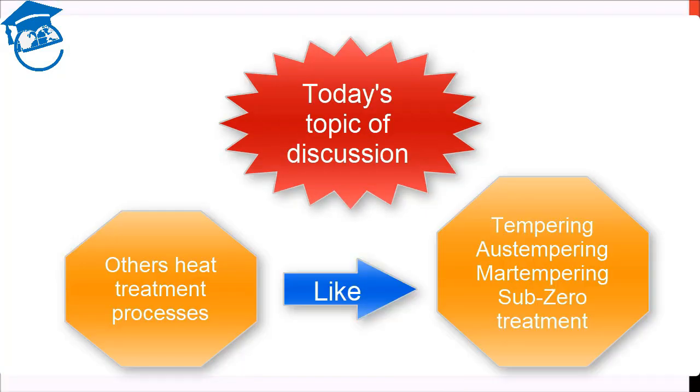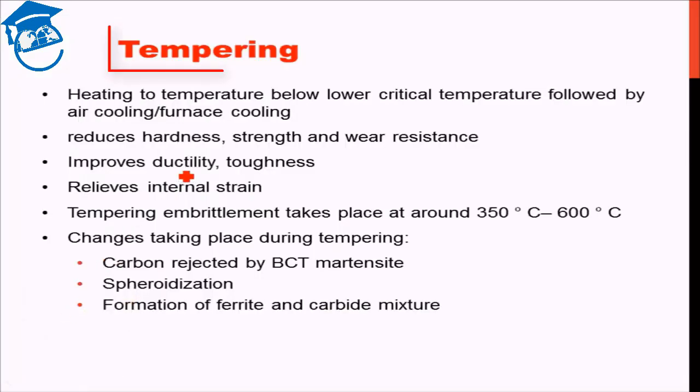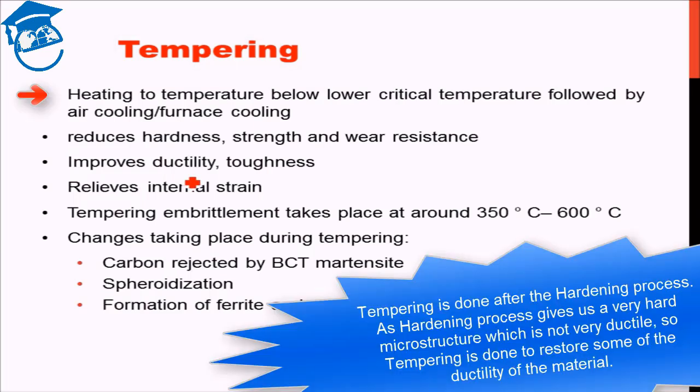Let us begin by discussing tempering process. I mentioned this briefly - the tempering process is a requirement after the hardening process. The hardening process gives you a very hard microstructure, but the problem is that it is not really ductile. It is a very brittle structure. So the hardened martensite needs to be tempered in order to restore some of its ductility. That is exactly what is done in the tempering process.